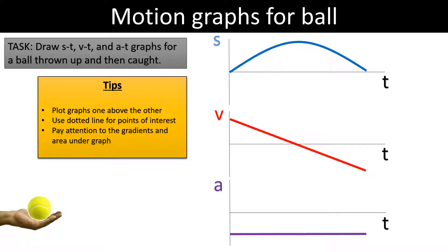So a couple of tips to help out: as we've done here, plot the graphs one above the other, use dotted lines to indicate points of interest like the peak of the throw or the end of what's going on, and it's very important to pay attention to the gradients.